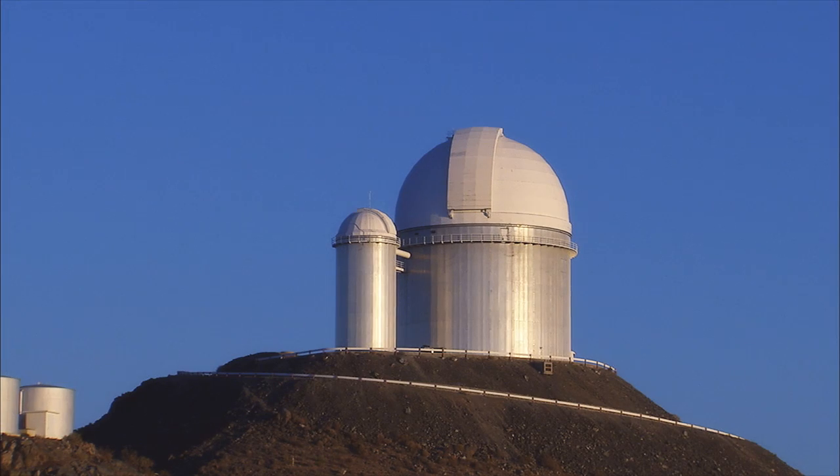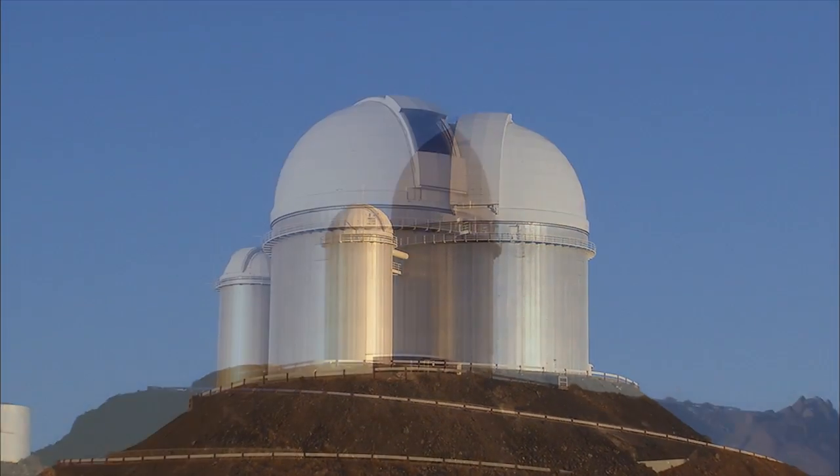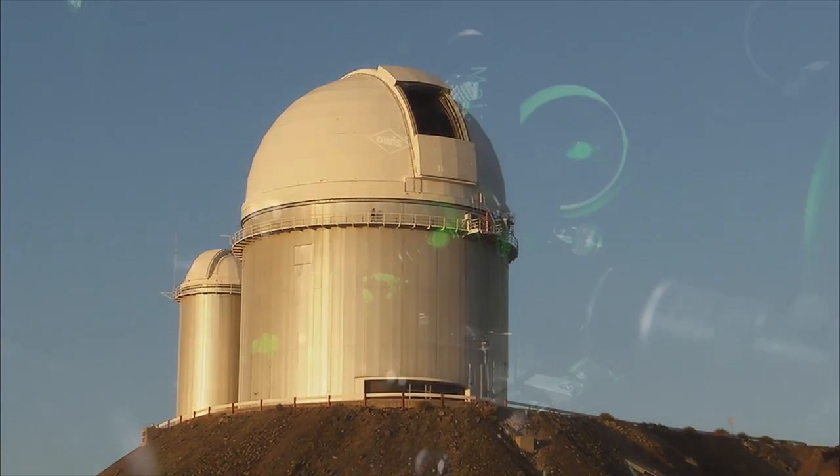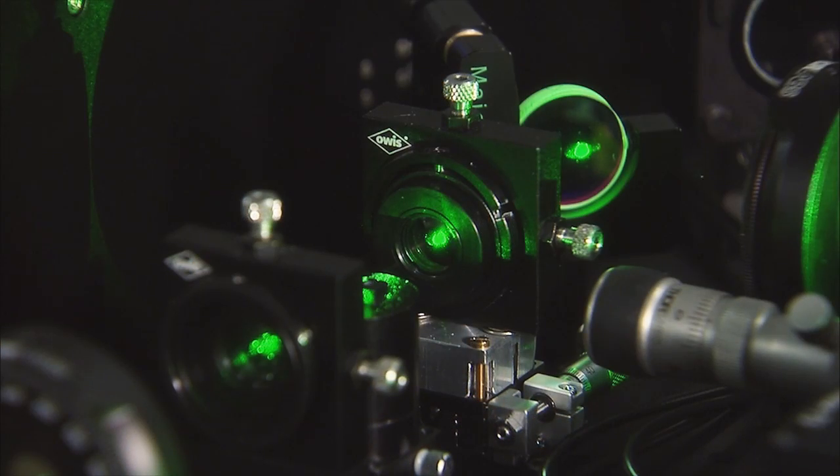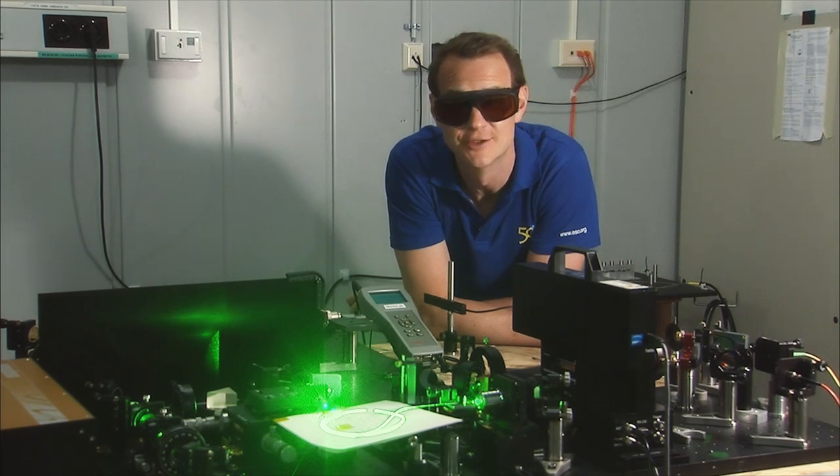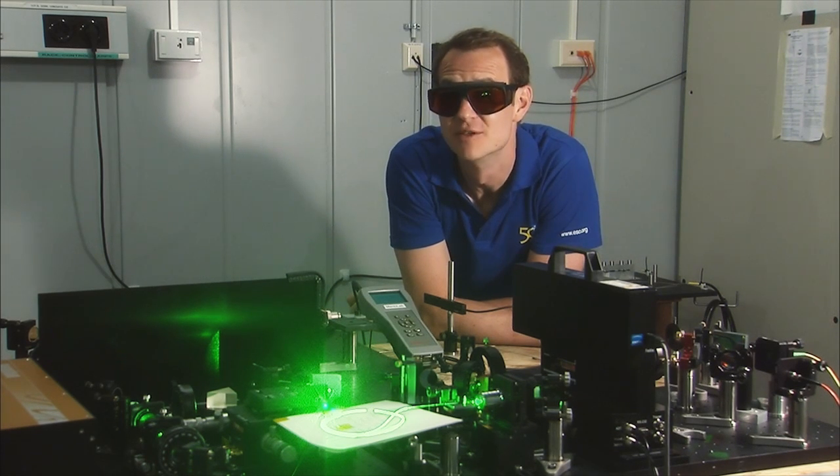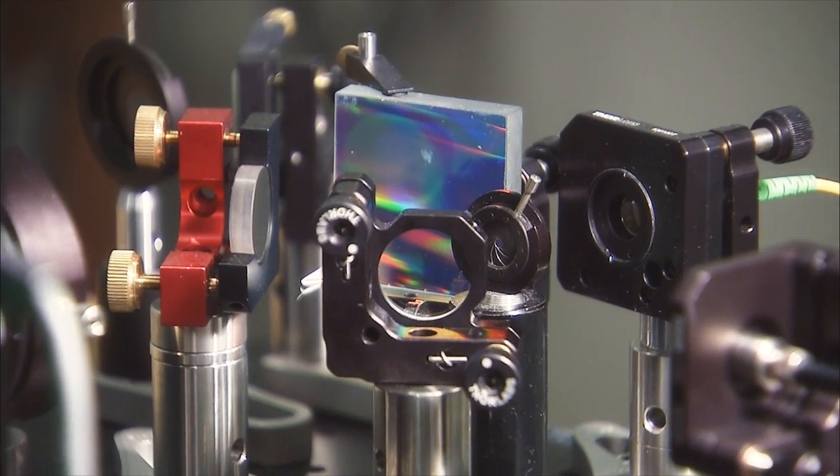ESO's venerable 3.6-metre telescope is also hunting for exoplanets. The HARPS spectrograph is the most accurate in the world. So far, it's discovered more than 150 planets.